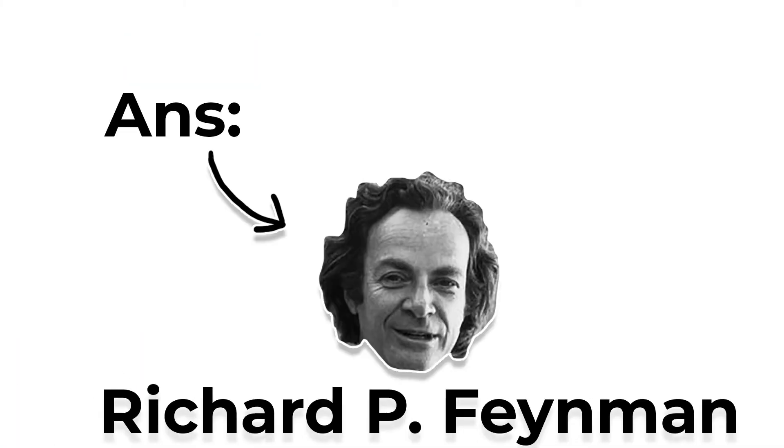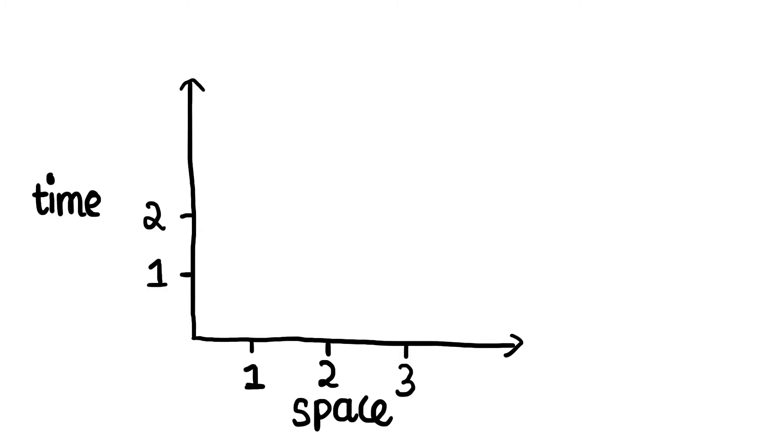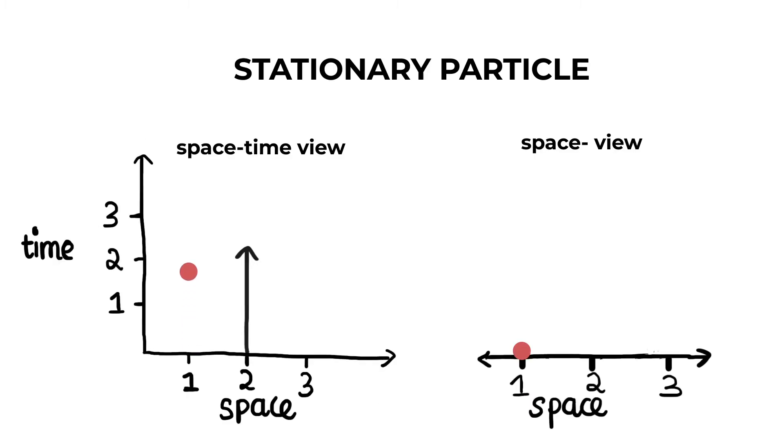Richard Feynman simplified these calculations in a truly mind-blowing way by drawing diagrams. These are drawn on space and time where time always moves.